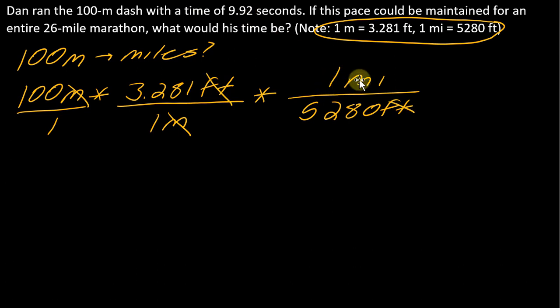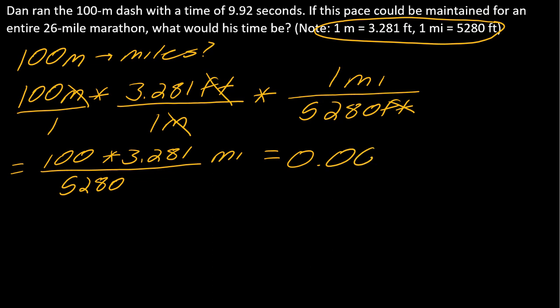So I put one meter here and 3.281 feet here, which will allow me to cancel out the meters. Then I need to go from feet to miles, so this is 5,280 feet here and one mile. The feet will cancel out, and I am just left with miles. I have to bust out my calculator and figure out how many miles is 100 meters. This equals 0.06214 miles.